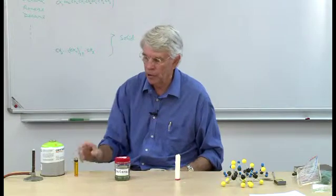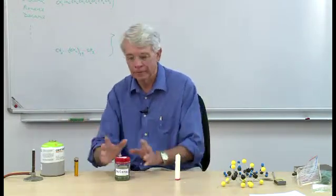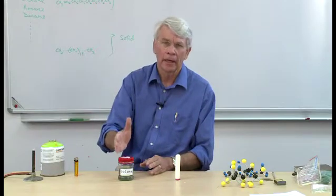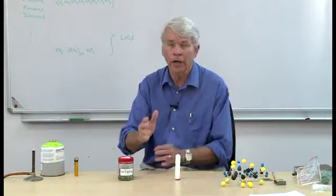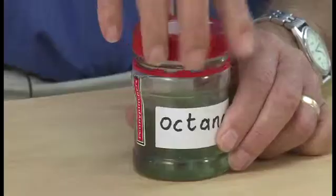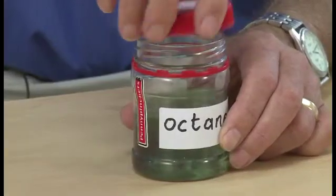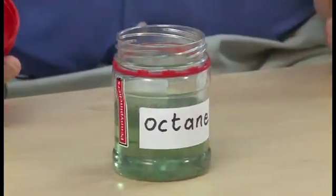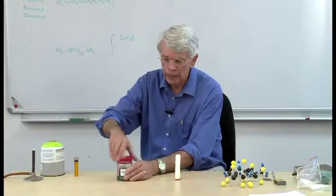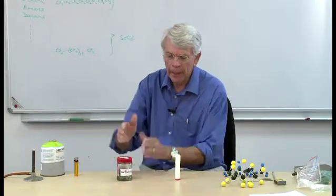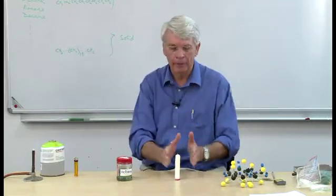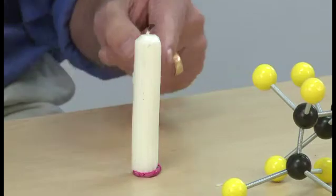As the carbon chain gets longer we get hexane, heptane, octane, nonane — those are all liquids. If I open that up the gas doesn't necessarily come off; it's a liquid, it's petrol — you put it in your car and drive with it. And then as the molecule gets longer and longer they start intertwining and you get your waxes.